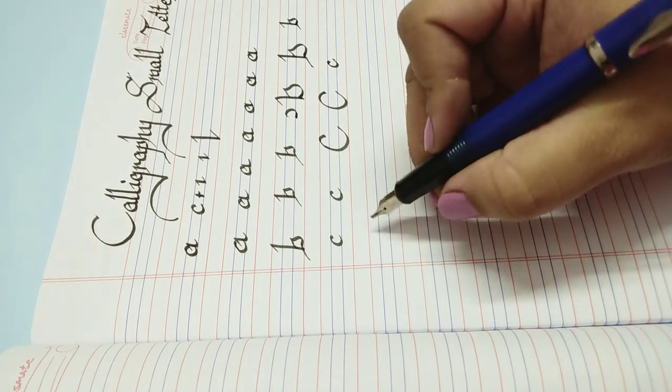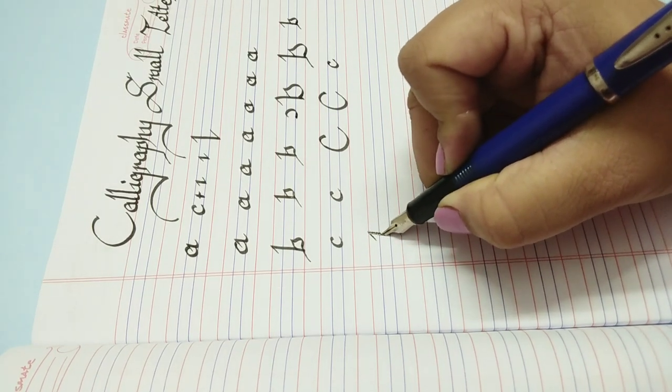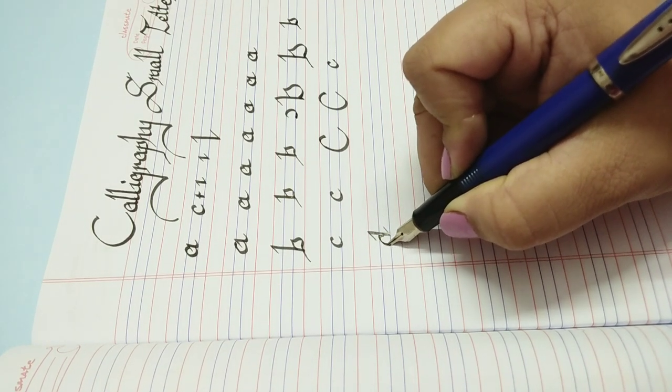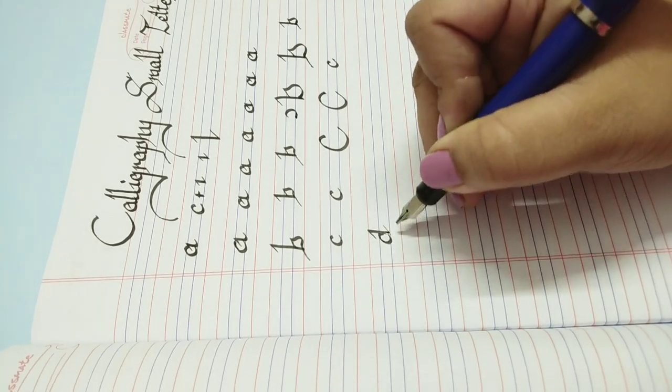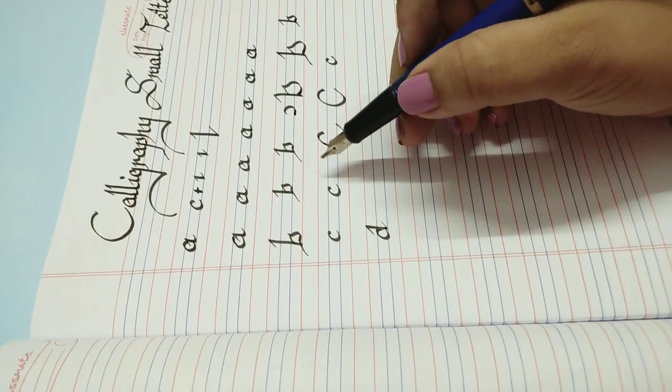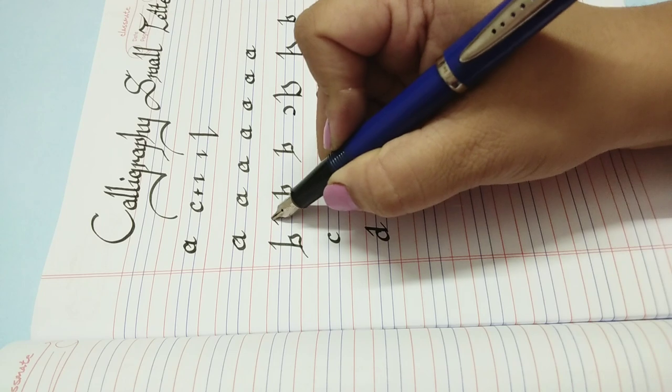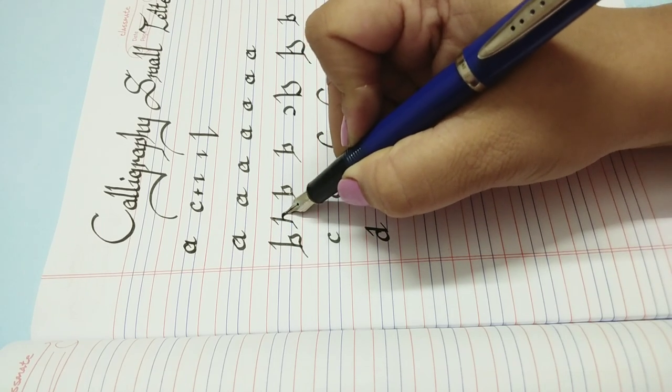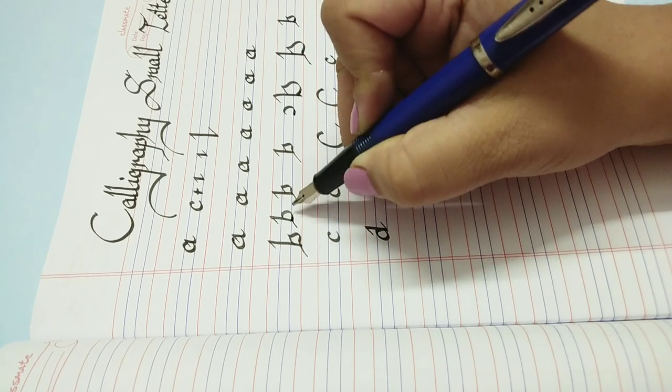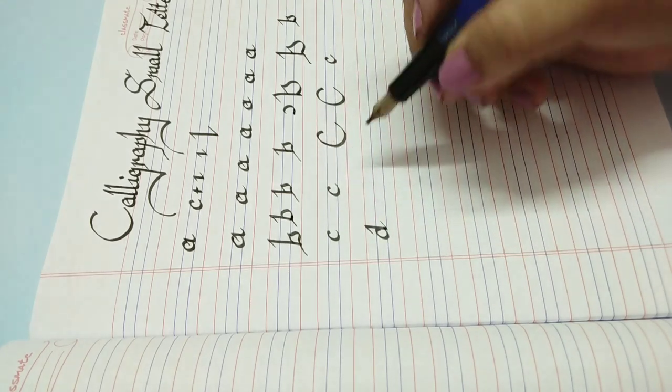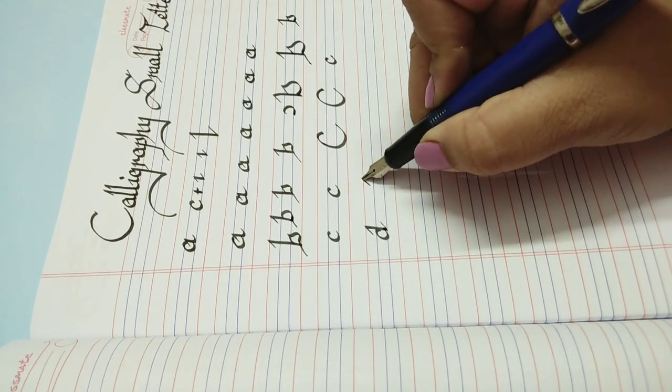Let's go to D. For D, we have taken a round. In B also you can take a simple round if you are not that comfortable with the curvy one. You can just take a simple round as well.